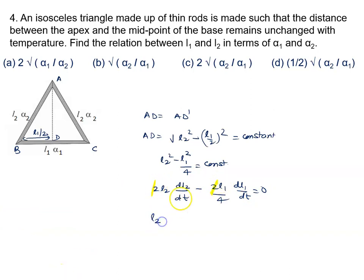We know change in length equals alpha L delta t. So dL1 equals alpha 1 L1 dt, and similarly for L2.